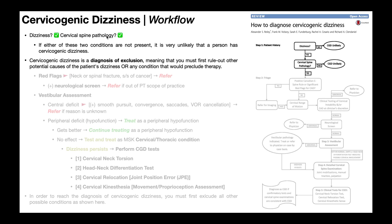Also, there needs to be a cervical spine pathology. It doesn't have to be something serious like a radiculopathy or whiplash — it could be as simple as a range of motion deficit in one or a few directions. But since it's cervicogenic dizziness, there has to be something cervical in origin causing the dizziness. If both of these are not present, then cervicogenic dizziness is very unlikely.